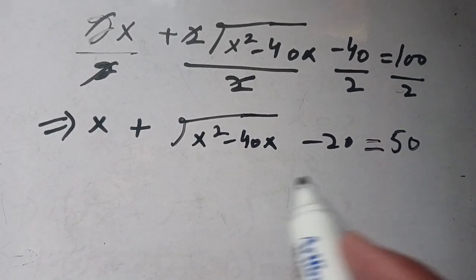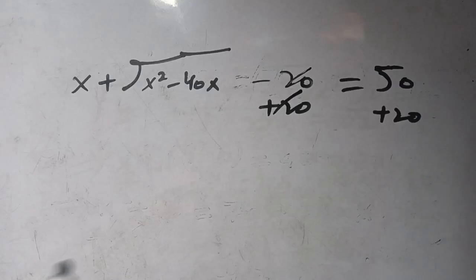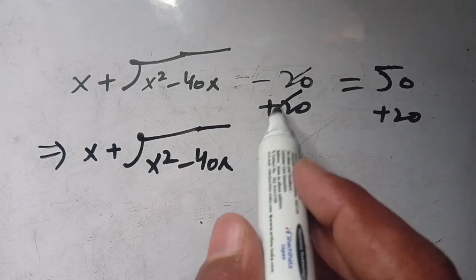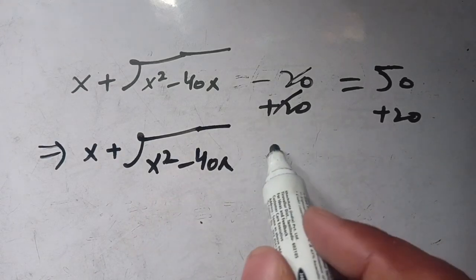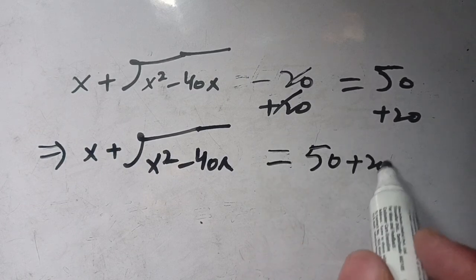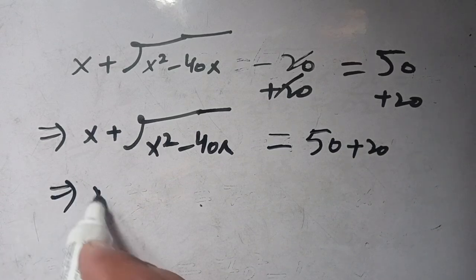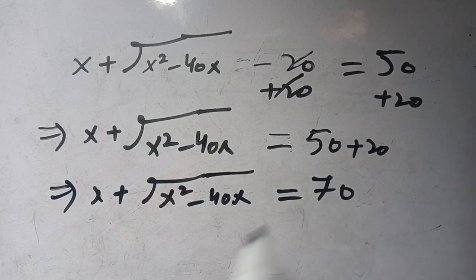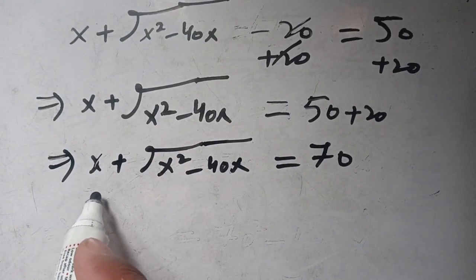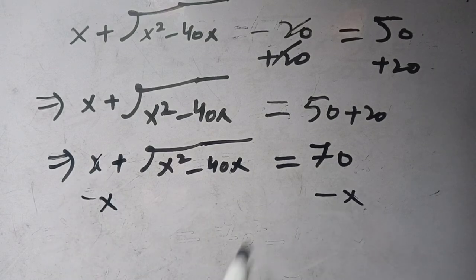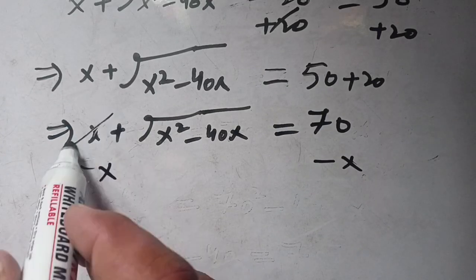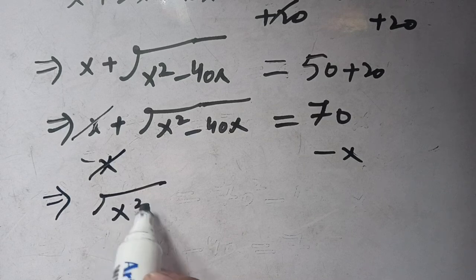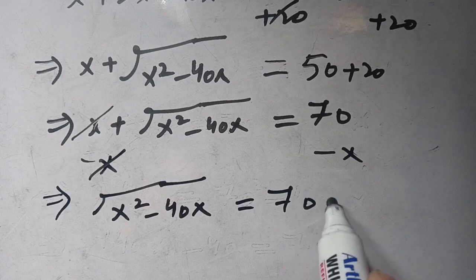We have x plus square root of x² minus 40x, and the positive and negative terms cancel, leaving square root of x² minus 40x equals 50 plus 20. On subtracting x from both sides, the left hand side becomes square root of x² minus 40x, it is equal to 70 minus x.